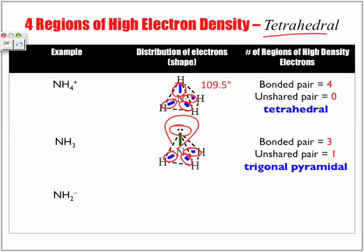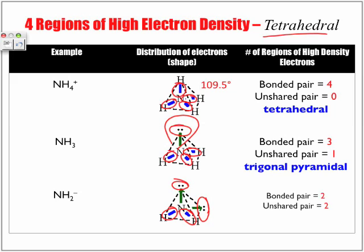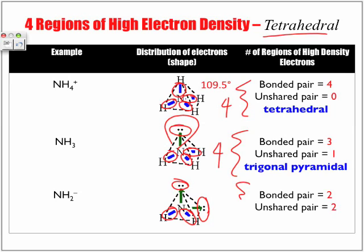In our last example here, NH2, notice how they're all variations of nitrogen with hydrogen. Our central atom, nitrogen, two hydrogen atoms bonded to that central atom. But here we have one, two unshared pairs. So two bonded pairs, two unshared pairs, a total still, all of these, four regions.